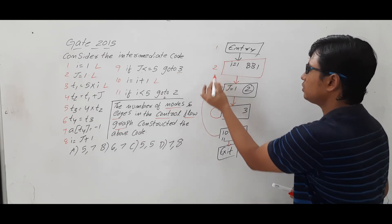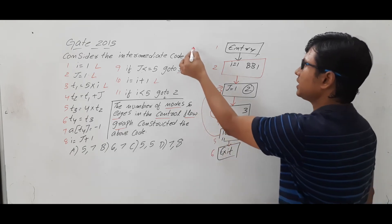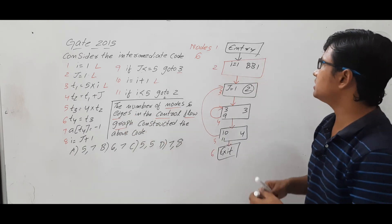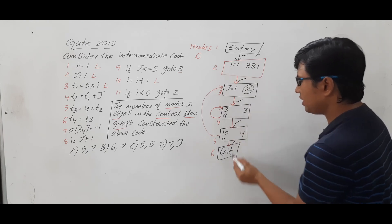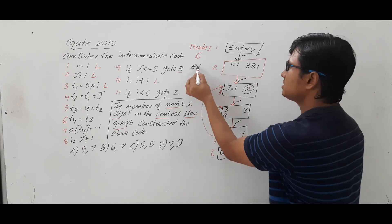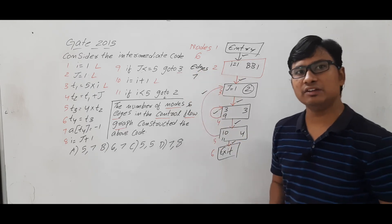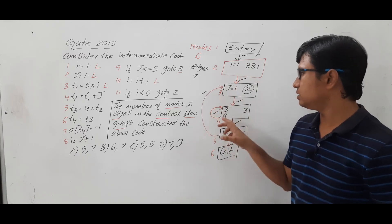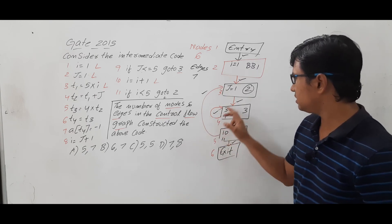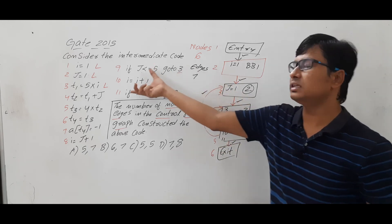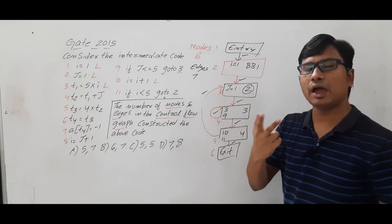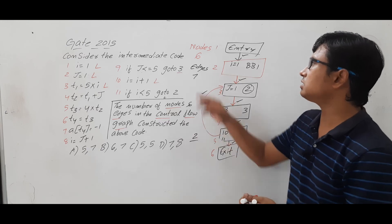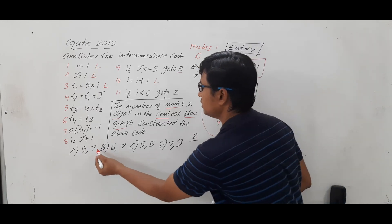From basic block 4, if the condition 'i < 5' is true, you go to statement 2 which is in basic block 2. If the condition fails, you go to the exit. Now counting the nodes in the control flow graph: 1, 2, 3, 4, 5, 6 — there are 6 nodes. Counting the edges: 1, 2, 3, 4, 5, 6, 7 — there are 7 edges. The control flow graph also has two cycles, indicating two loops in the intermediate code.